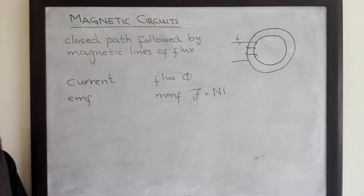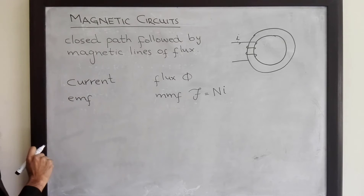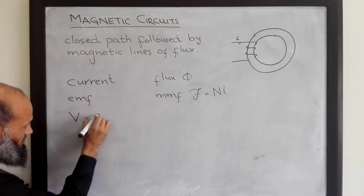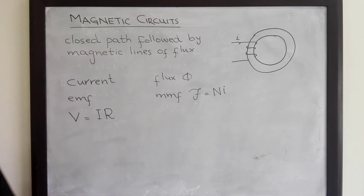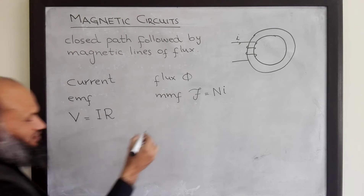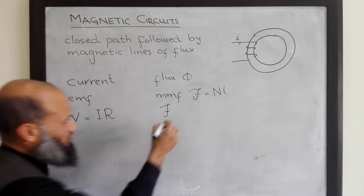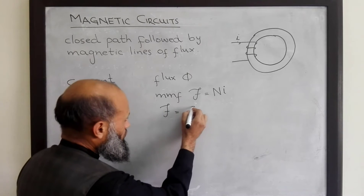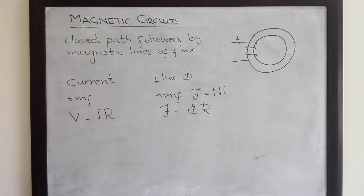In electrical circuits, current and voltage are related by Ohm's law: voltage equals current multiplied by resistance. Similarly, in magnetic circuits, MMF is related to flux by the relation: MMF equals flux multiplied by the reluctance of the core.